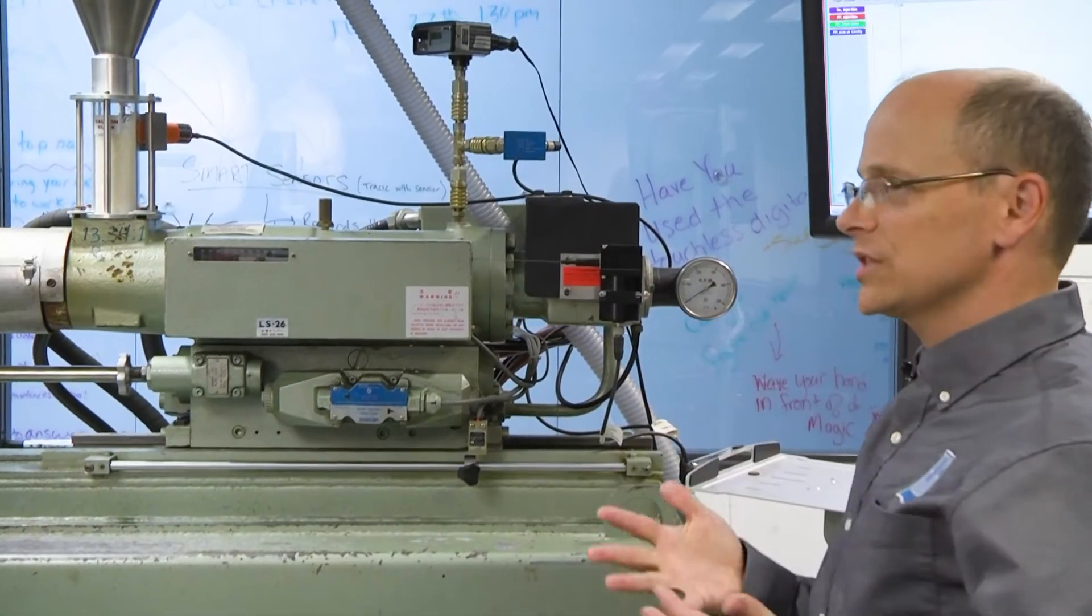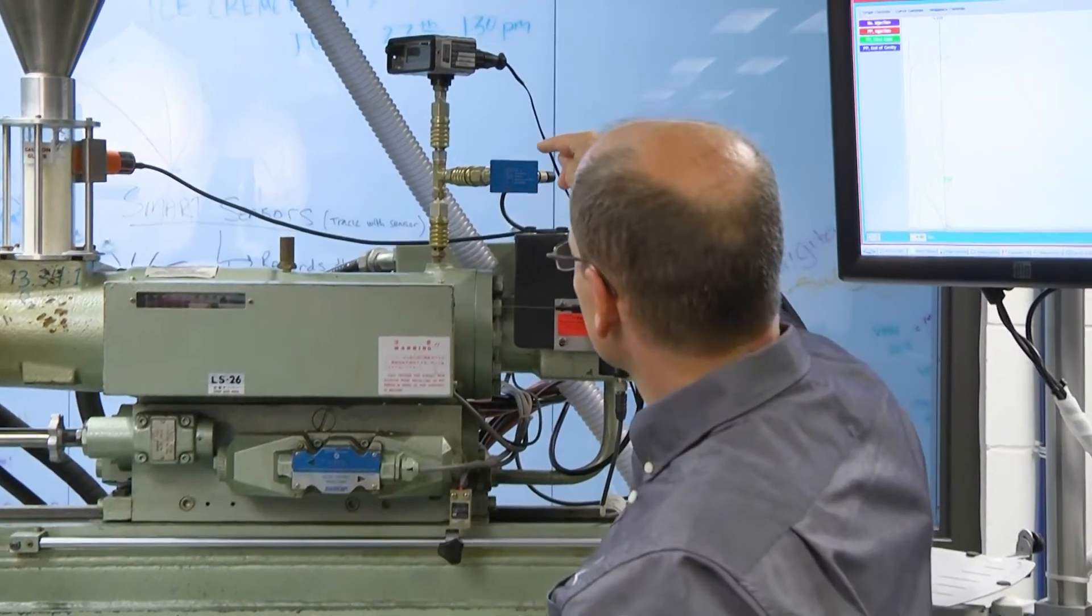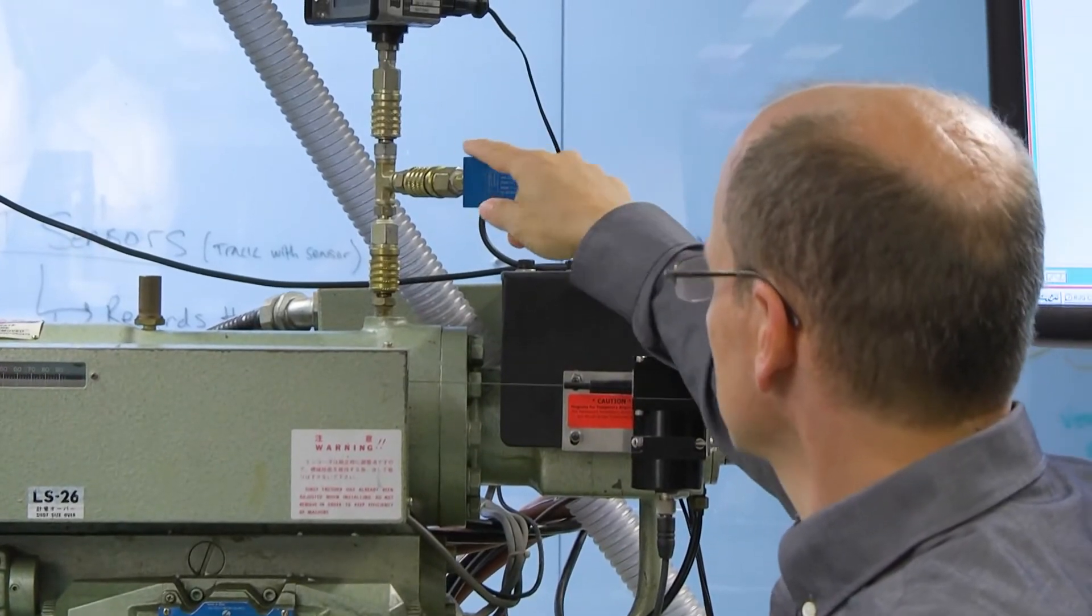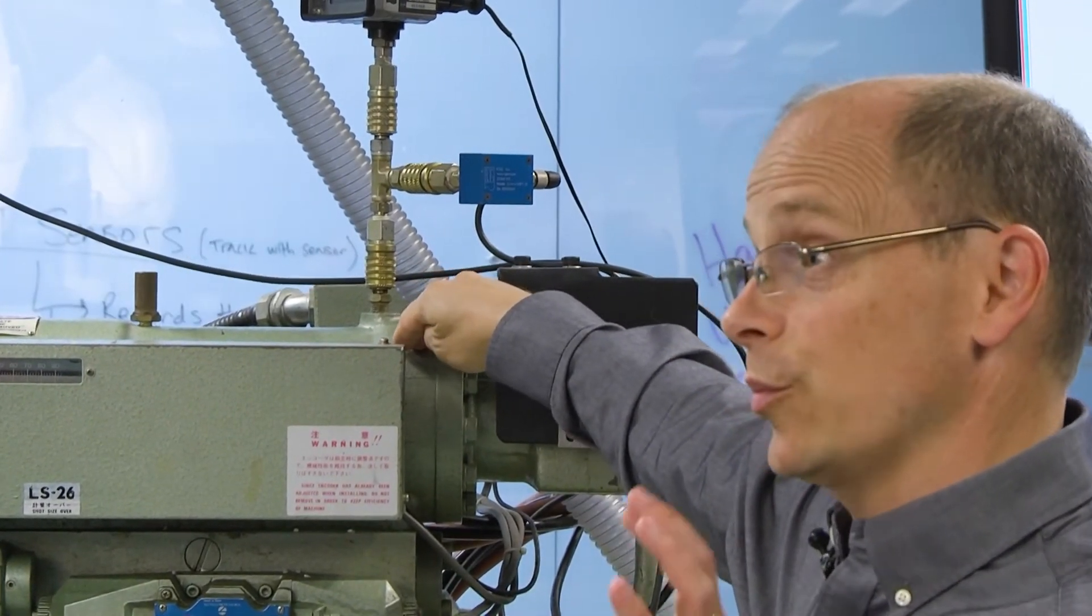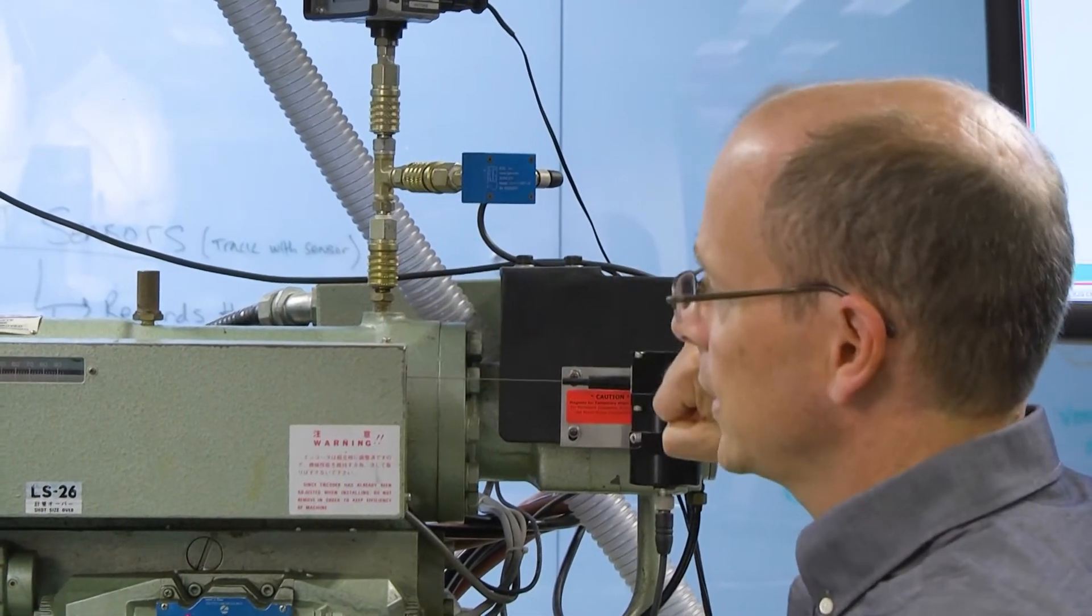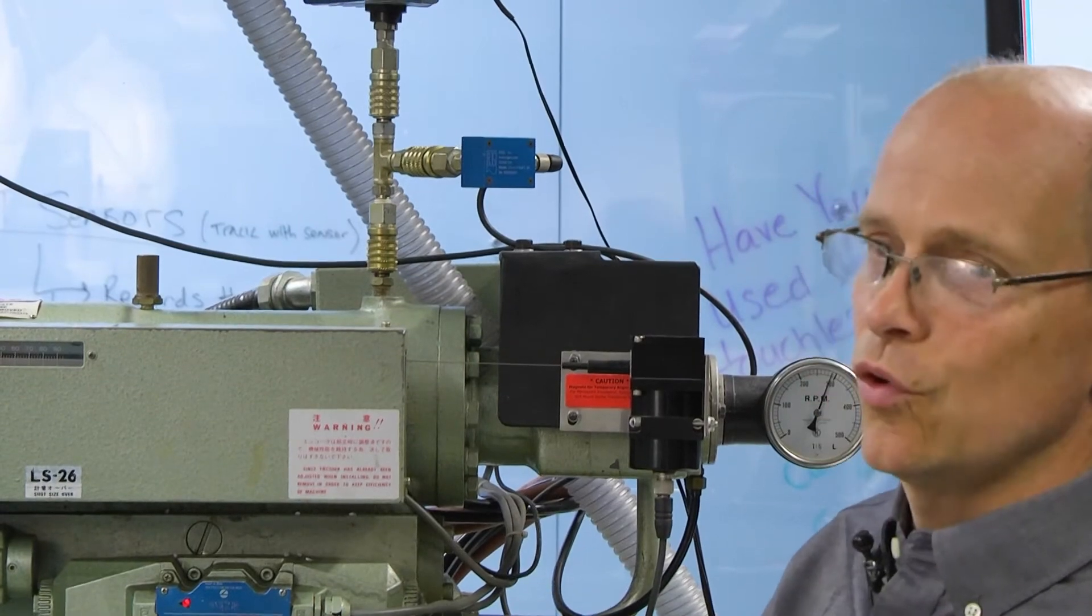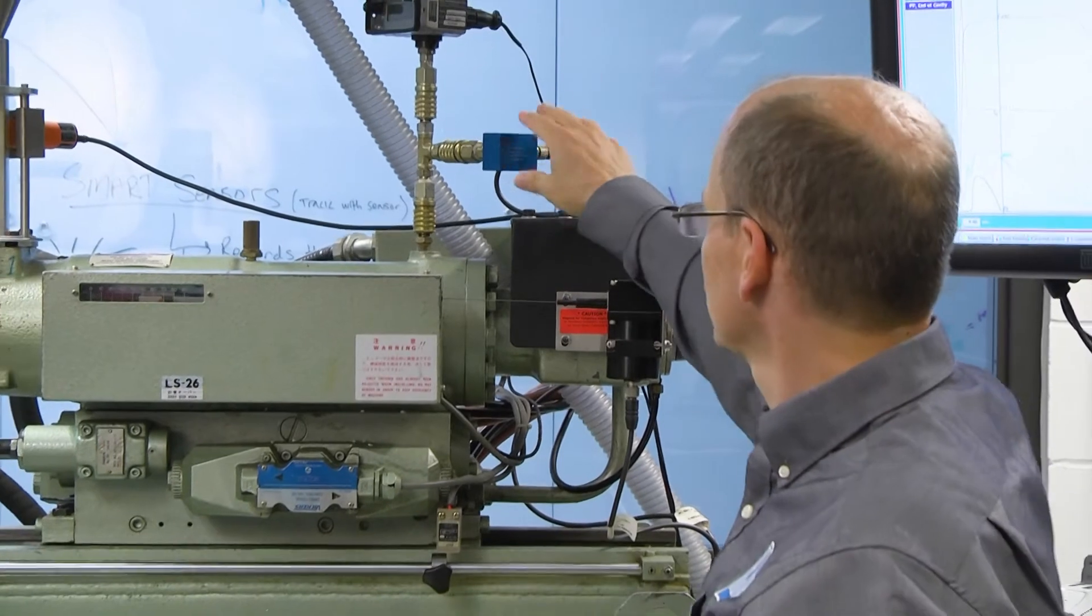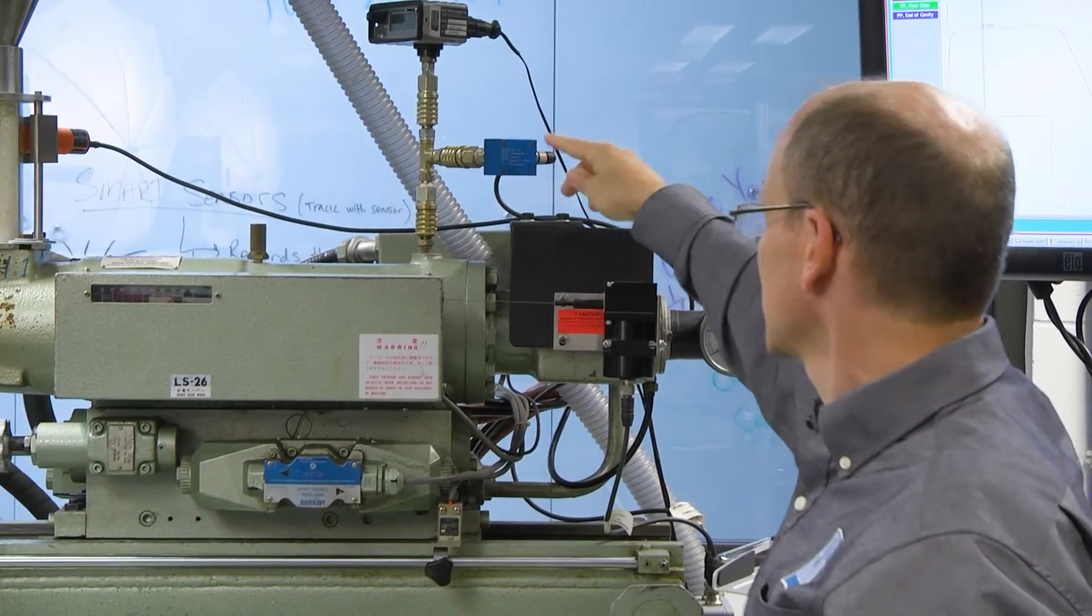There's two sensors that we use on the press. The first one is the injection pressure sensor. This is located at the back of the injection unit, measuring the pressure that it takes to push the injection unit forward and move material into the cavity. So this is the first of our two sensors.